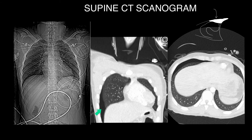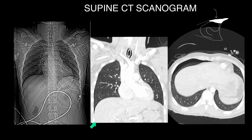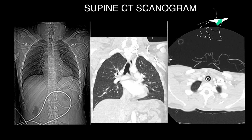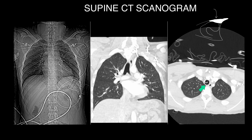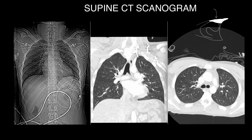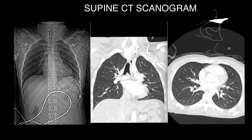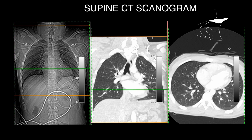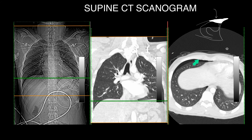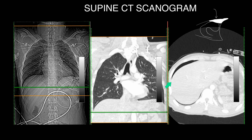Here's the pneumothorax collecting anteriorly, causing the deep costo-phrenic sulcus, which is depicted in this schematic diagram. Here's the pneumothorax — a shallow one at the apex — and as you'll see, as we go more caudally, the pneumothorax is better seen around the lung base. Here it is, collecting at the lung base, giving the so-called deep costo-phrenic sulcus sign.